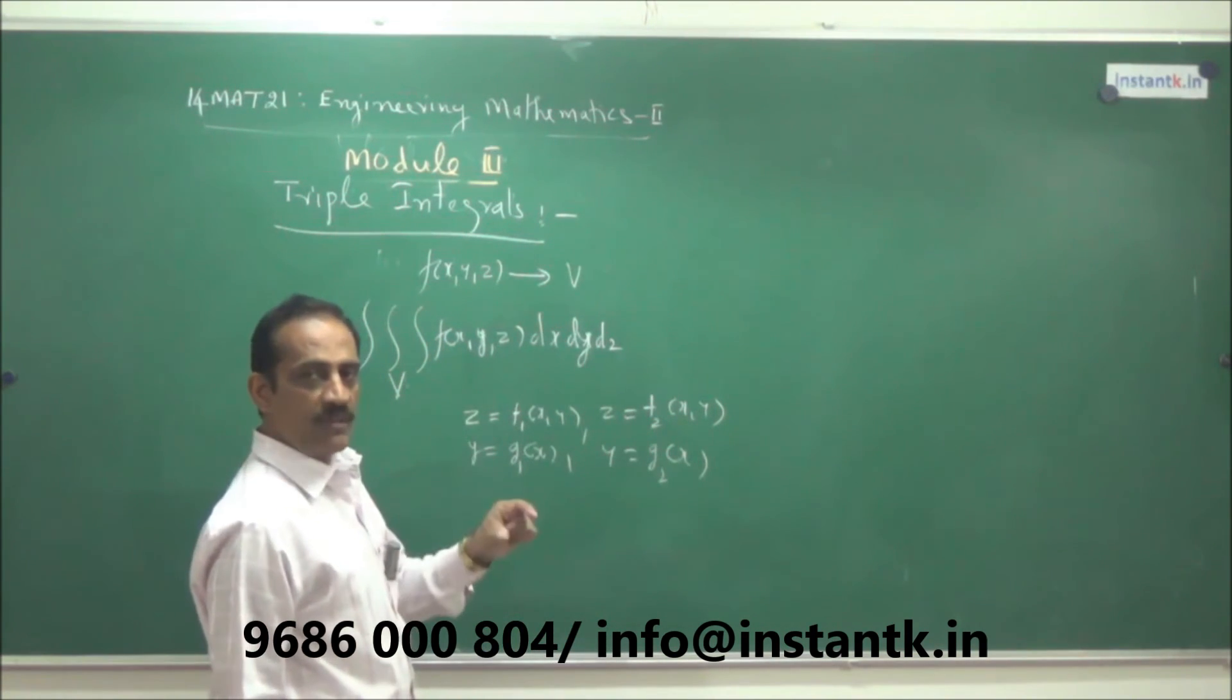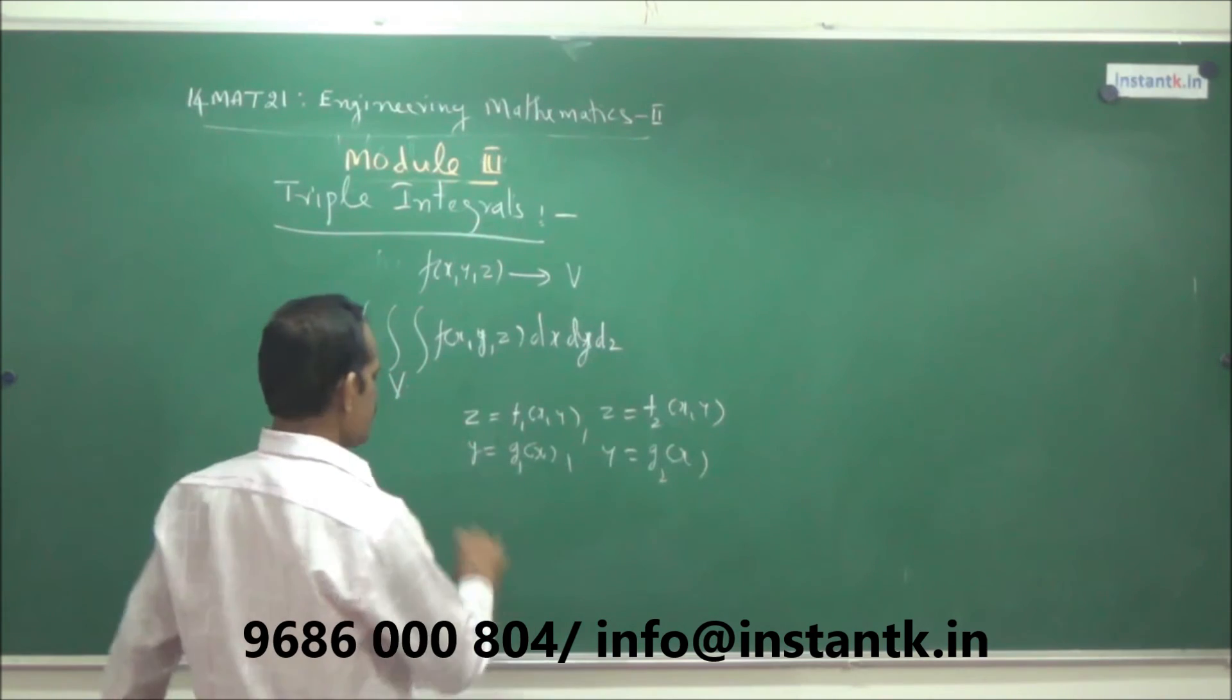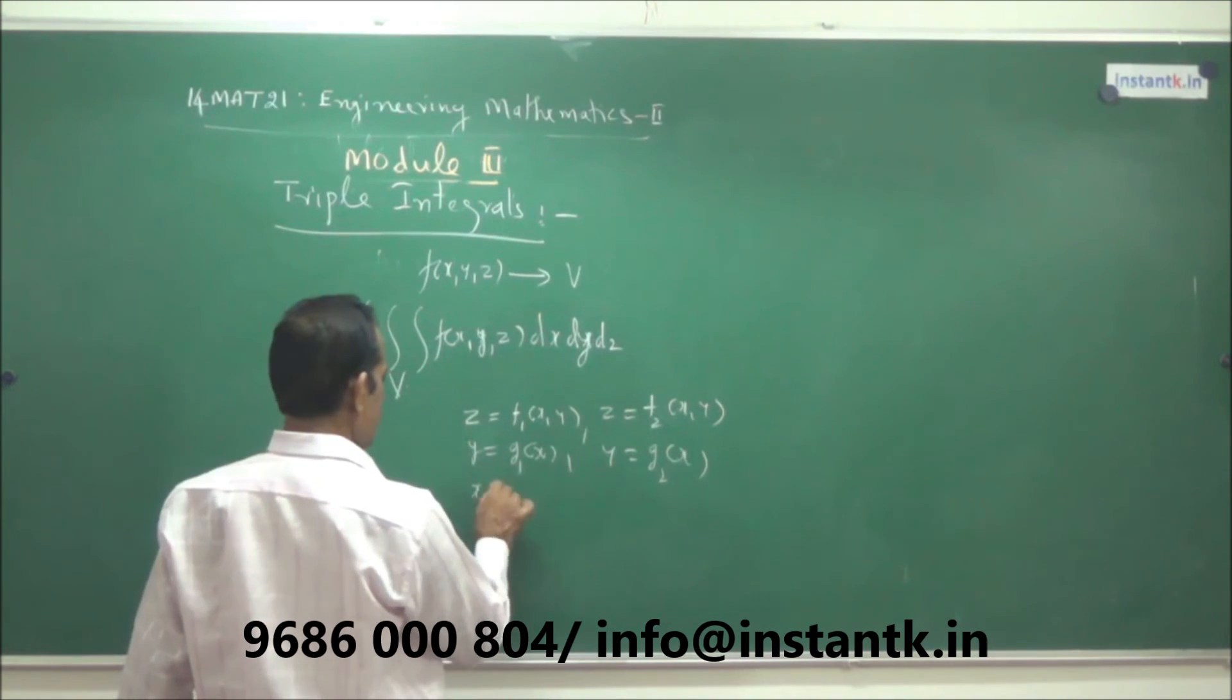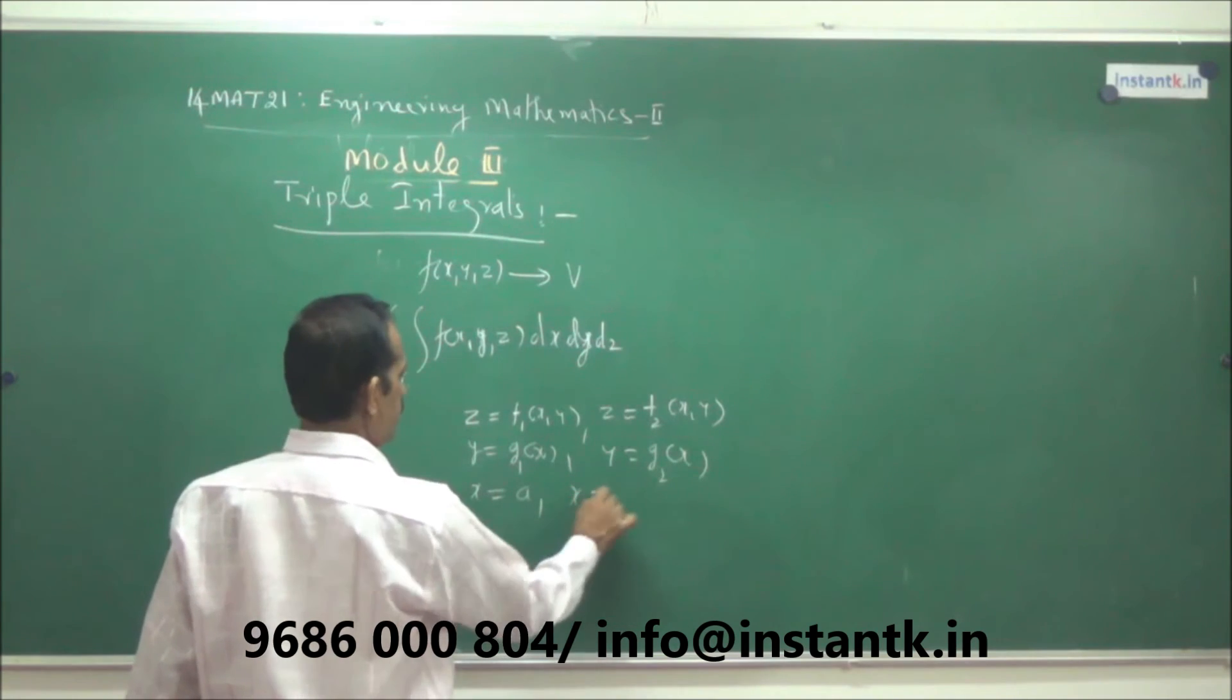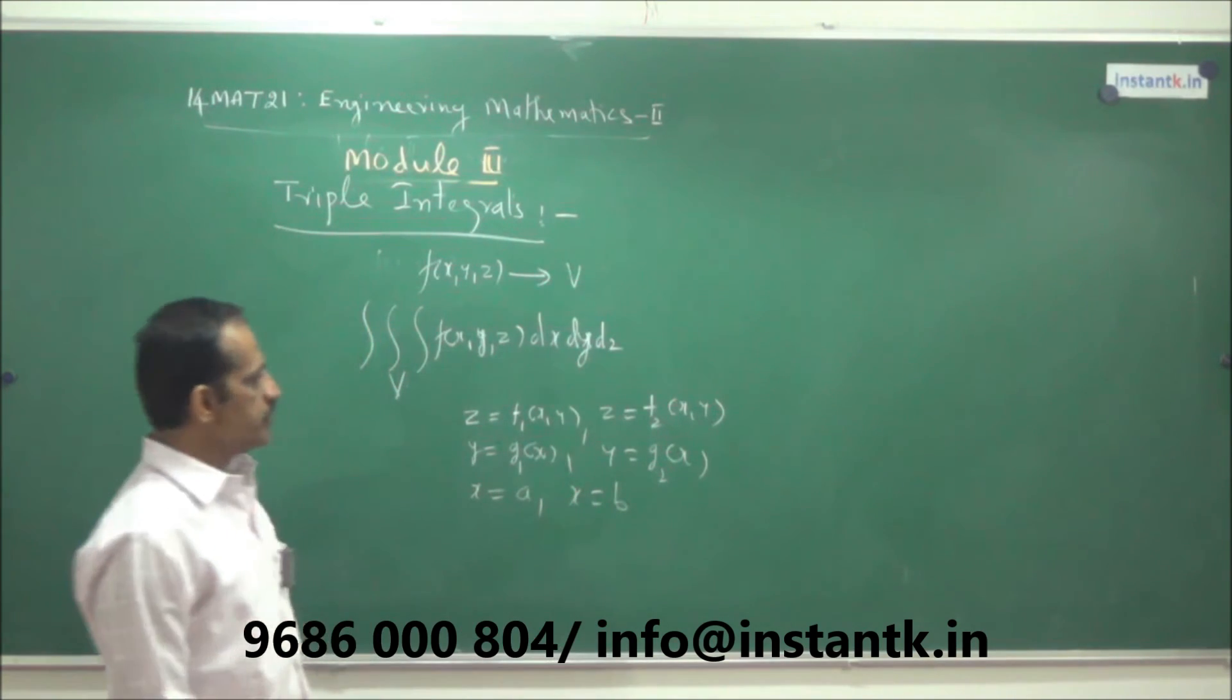So, two variables eliminated, so only one variable is remaining, so that gives constant limit. So, last one, let it be x. x is equal to some constant a to x is equal to some constant b.